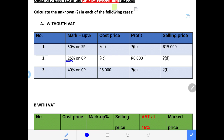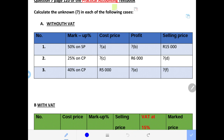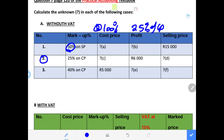Now the second scenario: we have 25% markup percentage and it is on cost price. That means our profit is calculated on cost price — because the markup percentage is on cost price. So in this case, our cost price under scenario number two is 100%. Our profit remains the markup percentage, which is 25% of the cost price. Previously it was 50% of the selling price; now our profit is 25% of the cost price.